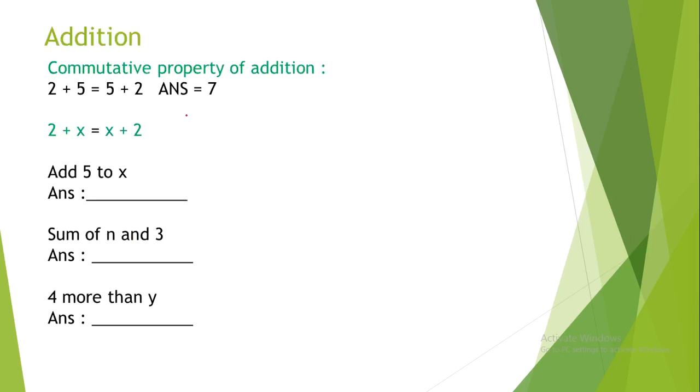Now, let's move on to addition. There is a commutative property of addition. 2 plus 5 is the same as 5 plus 2. So, the answer equals 7.